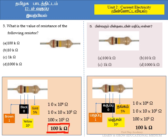So the answer for the given question is 100 kilo ohm. To recap: what is the value of the resistance of the following resistor? Based on the color coding from the diagram, the answer is option A — 100 kilo ohm — which is the correct answer for this question.